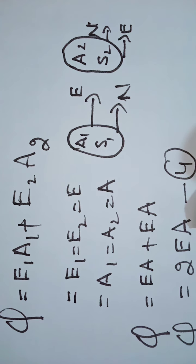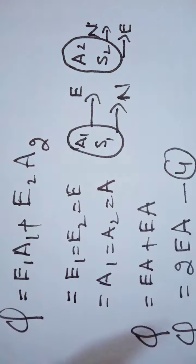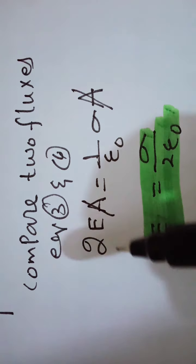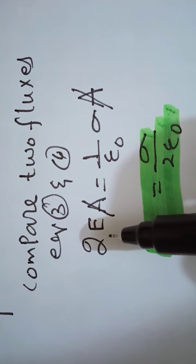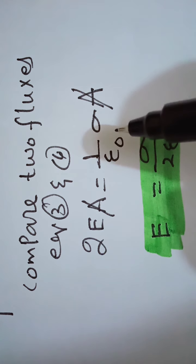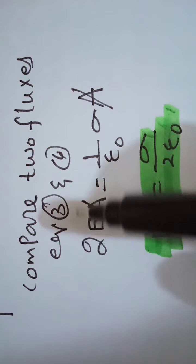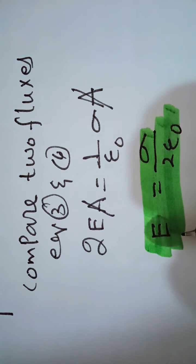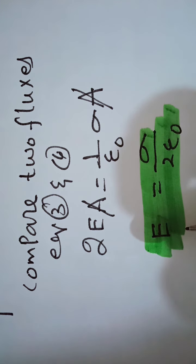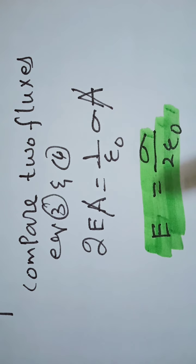We now compare the two fluxes: equation 3 (phi = σA/ε₀) from the plane sheet with positive charges, and equation 4 (phi = 2EA) from the Gaussian surface. Equating them gives the result: E equals sigma upon 2·epsilon-naught (E = σ/2ε₀). This is the electric field intensity near a plane charged surface — the result of the second application of Gauss's Law.